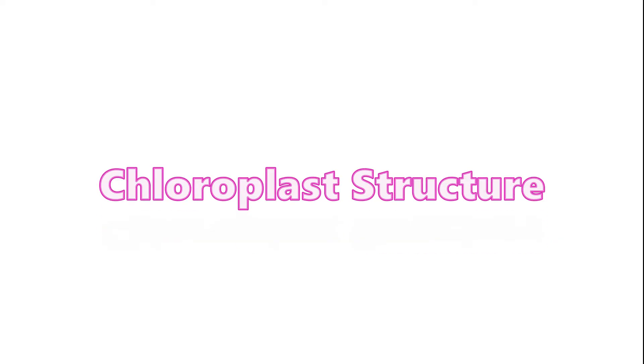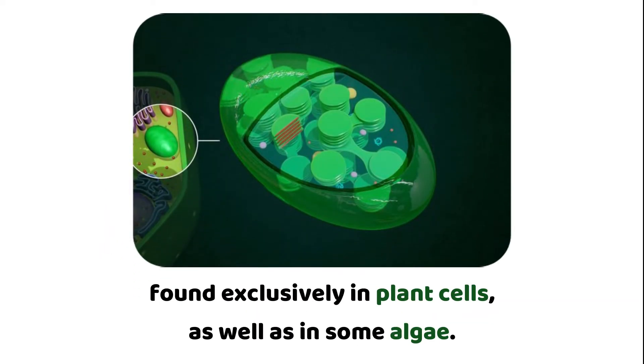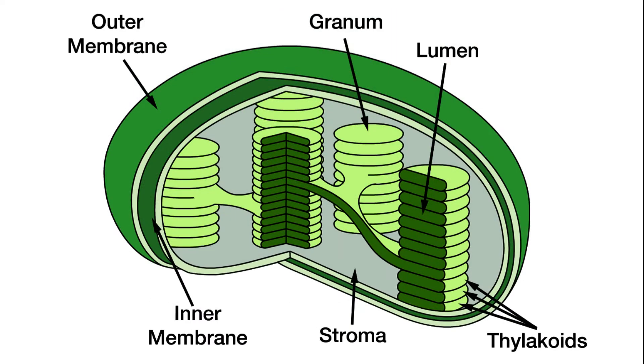Chloroplast Structure: Chloroplasts are double-membrane organelles found exclusively in plant cells, as well as in some algae. Let's take a closer look at their structure.